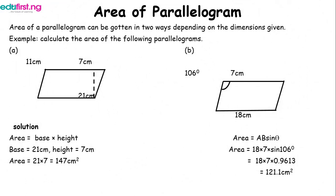Area of a parallelogram can be calculated in two ways: when the height is given, or when an angle is given. For part (a), where height is given, the formula is base times height. Our base is 21 cm and our height is 7 cm, so the area is 147 cm².